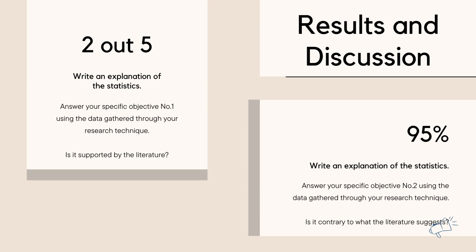After the methodology comes the results and discussion. Your results and discussion should again follow the order of your objectives of the study — just as we followed the objectives when writing the review of related literature. As you can see on the slides, the first example uses frequency — 2 out of 5 — where you write an explanation of the statistics and answer your specific objective number one, then support your answer with the literature you have.